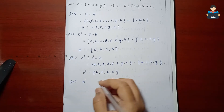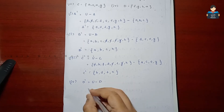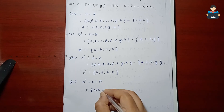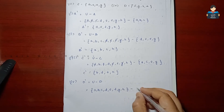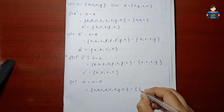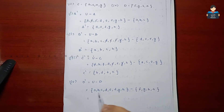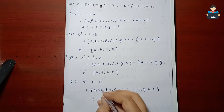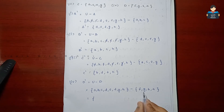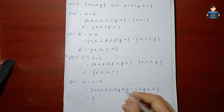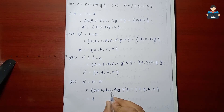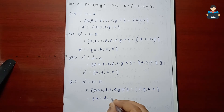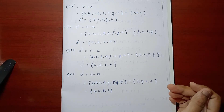Fourth subdivision — D complement = U minus D. Universal set is A, B, C, D, E, F, G, H. Set D has elements F, G, H, A. Strike out those common elements. Remaining elements are B, C, D, E. So D complement = {B, C, E} — after striking out the matching elements. Like, share, subscribe. Thank you.